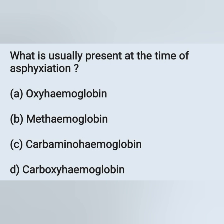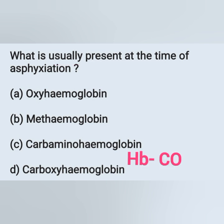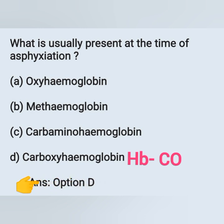Next question: what is usually present at the time of asphyxiation? Options: A) oxyhemoglobin, B) methemoglobin, C) carbaminohemoglobin, D) carboxyhemoglobin. Asphyxiation means the body is not having enough oxygen. The component present at the time of asphyxiation is hemoglobin combined with carbon monoxide, forming carboxyhemoglobin. Option D is the correct answer.